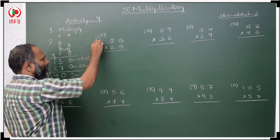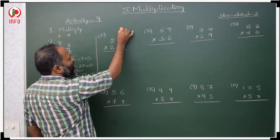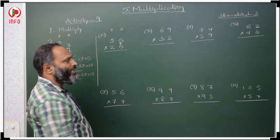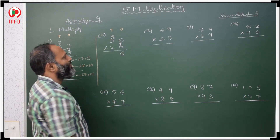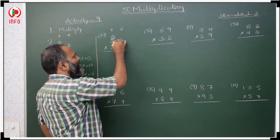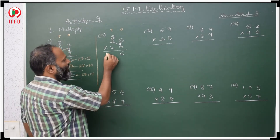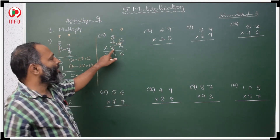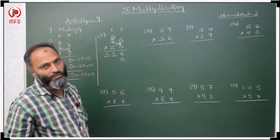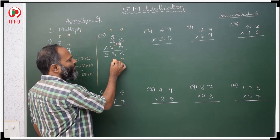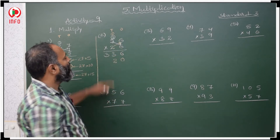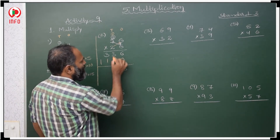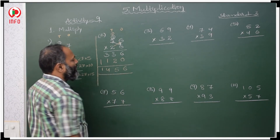In the same way: this is ones place, this is tens place. Start with 6 with 6: 6 sixes are 36, write 6 ones and carry 3 tens. 6 fives are 30, 30 plus 3 is 33, write 33 completely. After that we have to multiply with 2. 2 is in tens place, so first write 0. Then: 2 sixes are 12, write 2 carry 1; 2 fives are 10 plus 1 is 11. Now add: 6, 5, 4, 1 — answer is 1456.